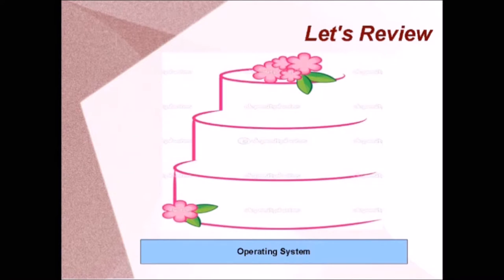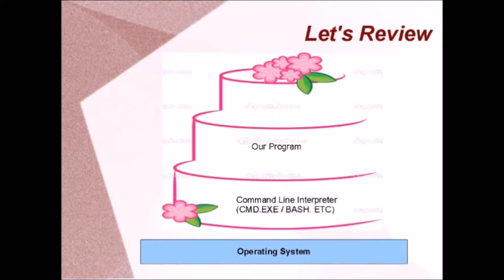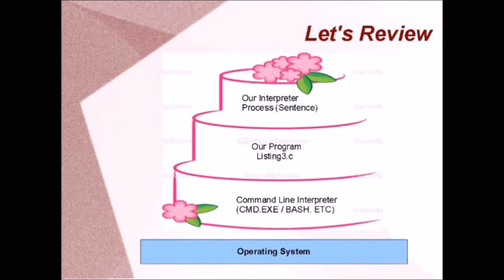Let's take a moment to review. At the very bottom layer we have our operating system. On top of that is some sort of command line interpreter — command.exe in Windows or bash shell. On top of that we have our program, listing3.c. Inside listing3.c, we have our interpreter responsible for taking commands like 'add' and 'echo' and interpreting them. The main function is called process, and it takes in a sentence. At this point you might reasonably ask — what does any of this have to do with internet programming?